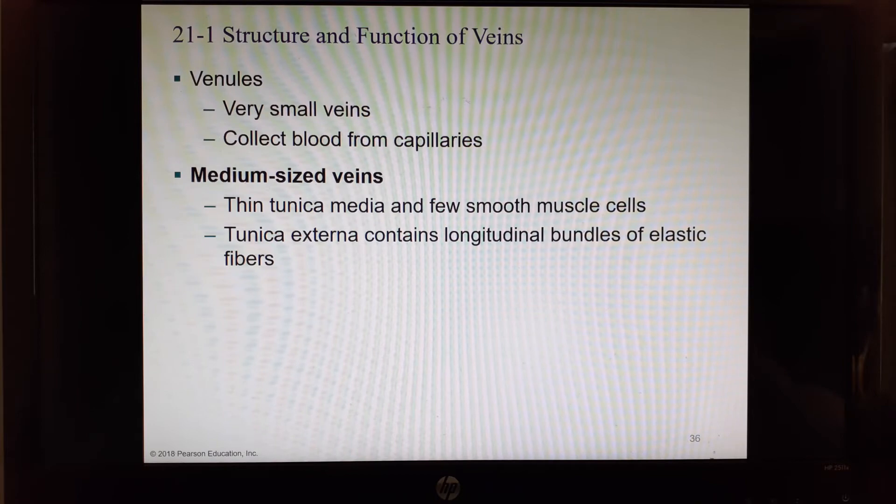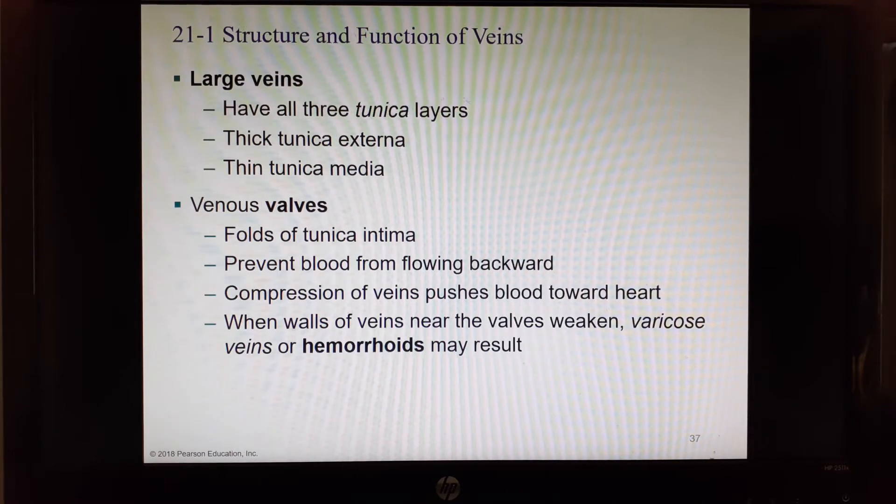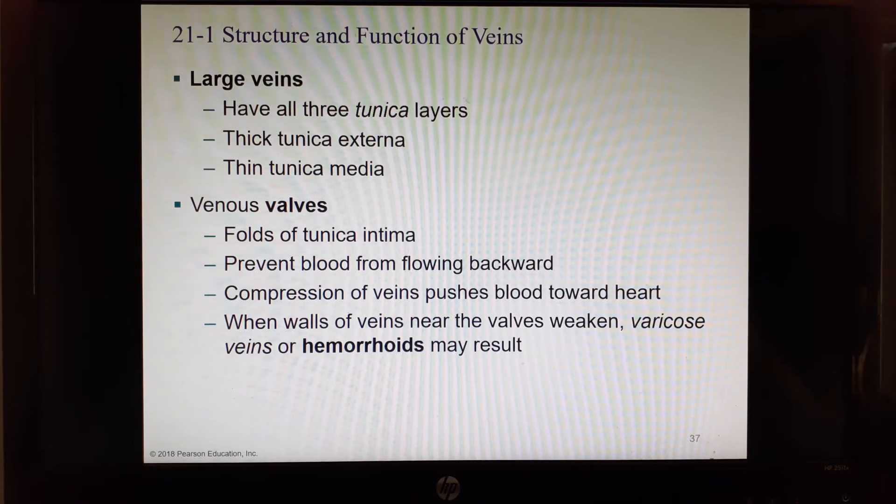Venules are the tiniest veins and they're the first veins after the capillary beds. Then they pass the blood up to medium-sized veins. They have a thin tunica media and a few muscle cells and they have longitudinal bundles of elastic fibers running the lengthwise direction. Larger veins have all three layers: thick external layer, thin media layer, and these are the size veins that usually have the valves.